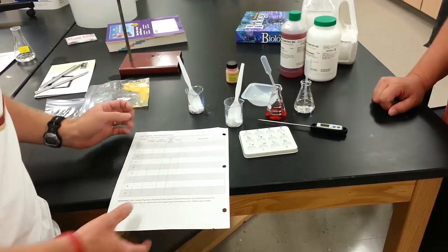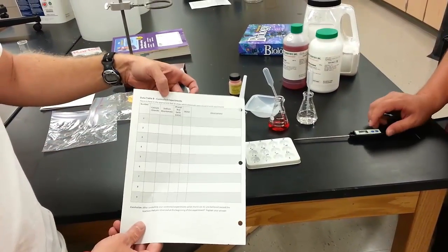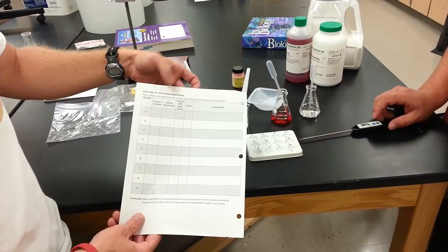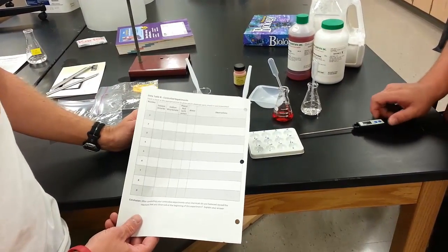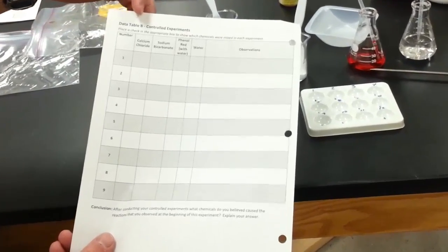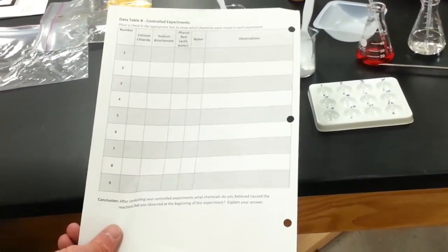Welcome back, this is part two. You're really going to focus on controlled experiments for this portion of your experiment today. A controlled experiment is where you try to isolate one variable and see how the other variables influence it.